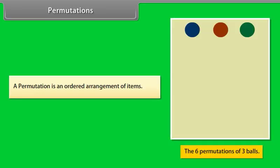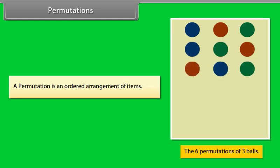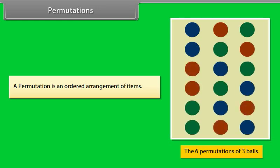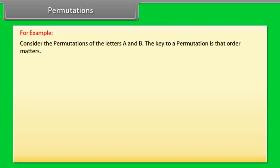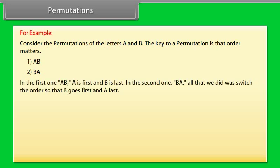Permutations. A permutation is an ordered arrangement of items. For example, consider the permutations of the letters A and B. Just think about how many different ways you can arrange A and B. The key to a permutation is that order matters. As you can see, the only difference between the two permutations is the order. In the first one, A B — A is first and B is last. In the second one, B A — all we did was switch the order so that B goes first and A last.